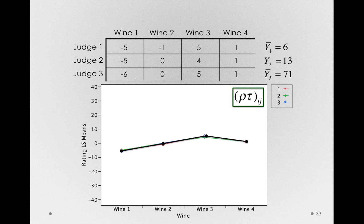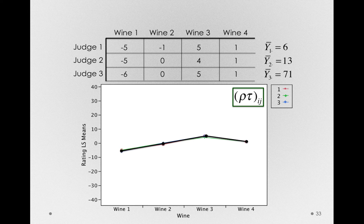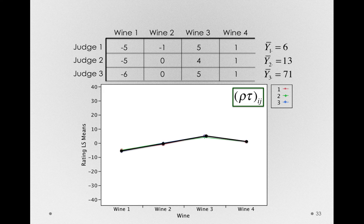And that's why that interaction term is actually the error term in our model. And remember, interactions are always addressing the same question: Does the effect of one factor depend on the levels of the other factor? So in this case, we state it as, does the effect of wine depend on the judge who's making the ratings?